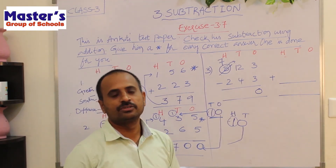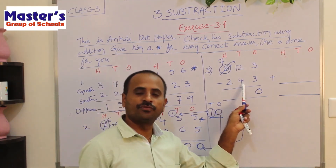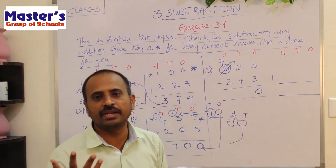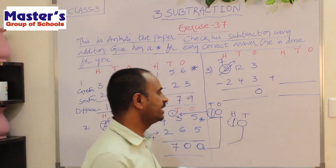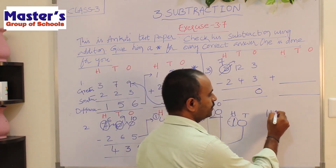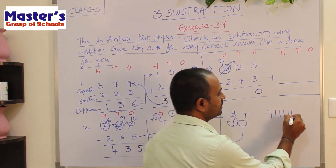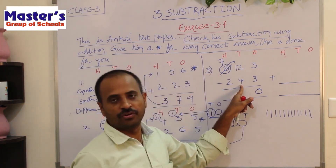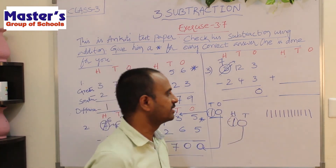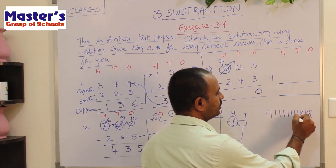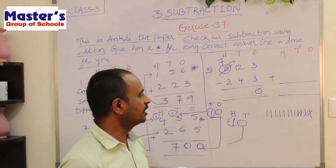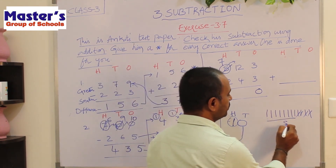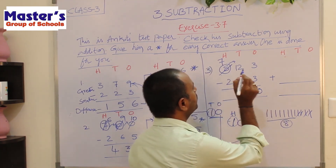Subtract 4 from 12. Draw 12 lines and strike off 4 lines: 1, 2, 3, 4. There are remaining 8 lines. Write 8 in tens place.